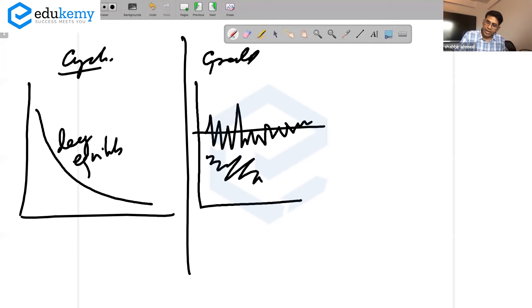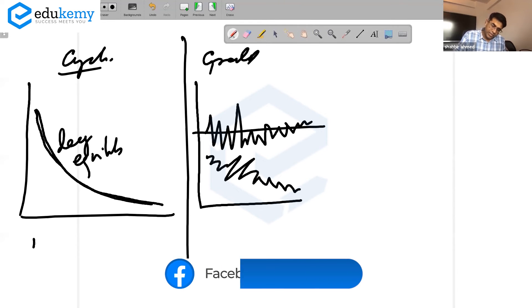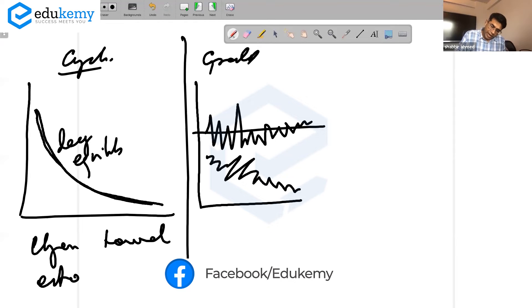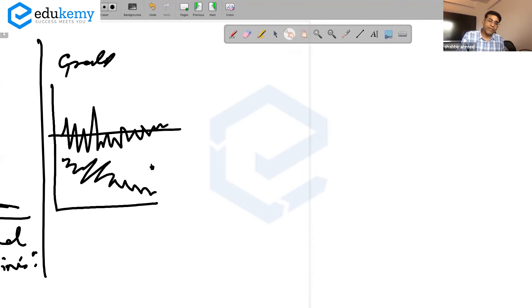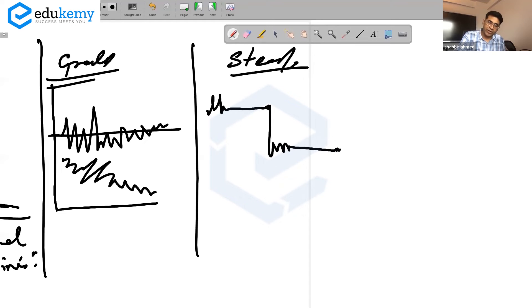In graded time there can be fluctuations over some mean variations. There can be fluctuations while there is lowering. In cyclic time it's a smooth gradual decline - changes towards entropy, towards energy maximization. In the graded state there are fluctuations, and we have the steady state.